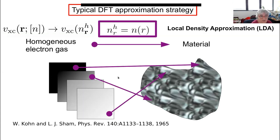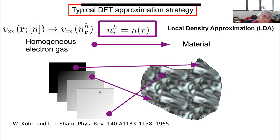This is called the local density approximation. Kohn and Sham proposed to use the electron gas that has the same density as your material at that point. So if you're at one point, you take the homogeneous electron gas with that local density; at another point, you take a homogeneous electron gas with the density of that point, and so on. This local density approximation is really what made density functional theory feasible, because otherwise there would not have been a reasonable approximation.